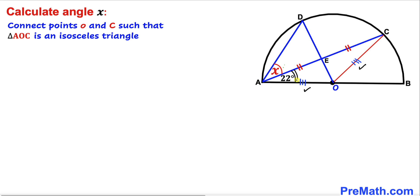Since angle BAC is 22 degrees, this base angle has to be 22 degrees as well. The sum of the angles in any triangle is 180 degrees, so with both base angles at 22 degrees, angle AOC must be 180 − 44 = 136 degrees.